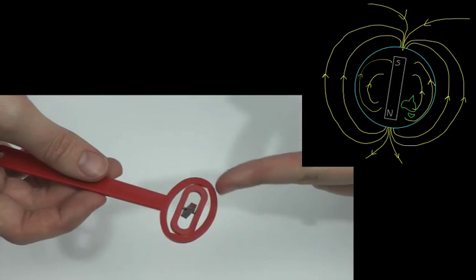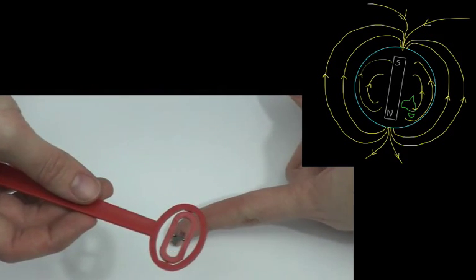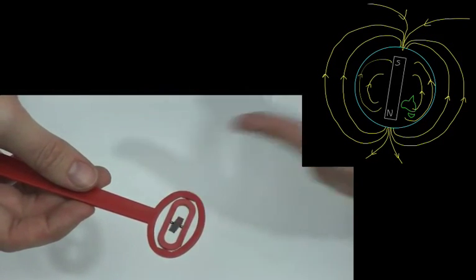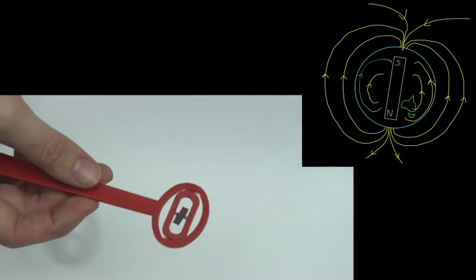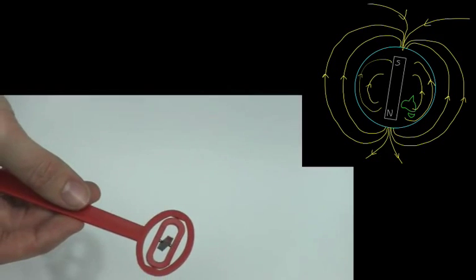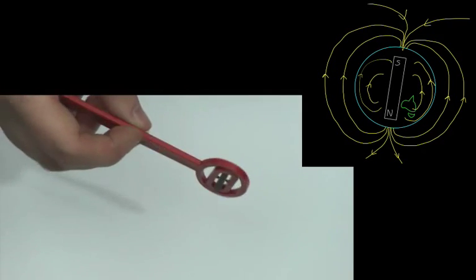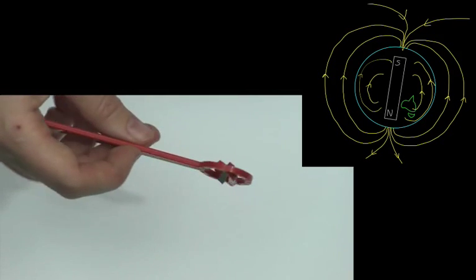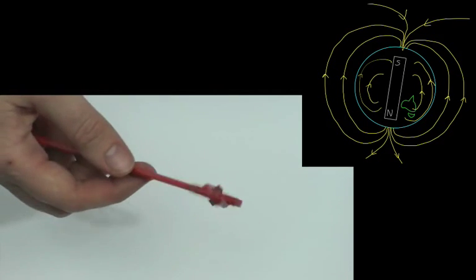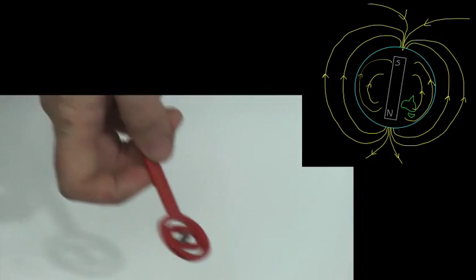As you can see here, this magnet is actually making quite a steep angle with the floor, suggesting that in Australia, or at least here in Sydney, the magnetic field lines are coming up out of the floor at a relatively steep angle. So as we move the compass around, the magnet remains pointing in the same direction.